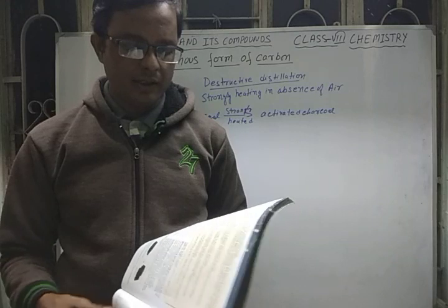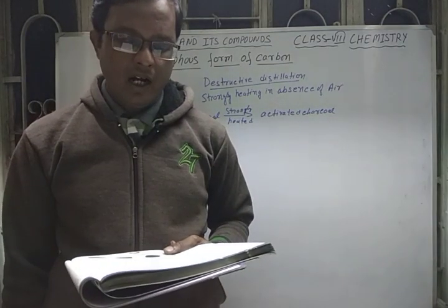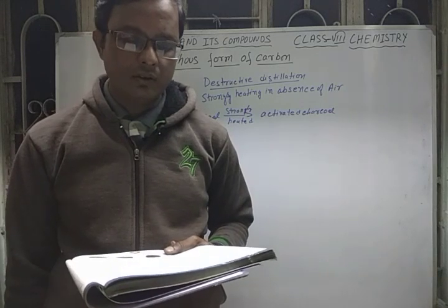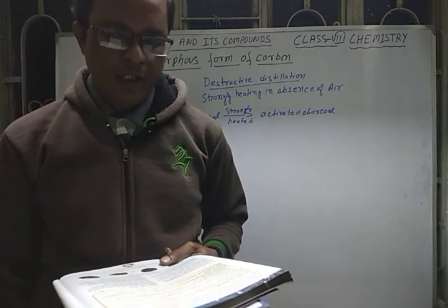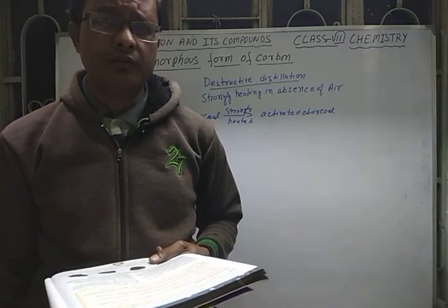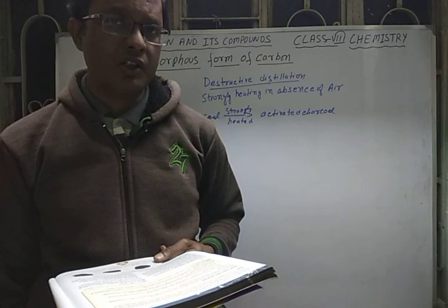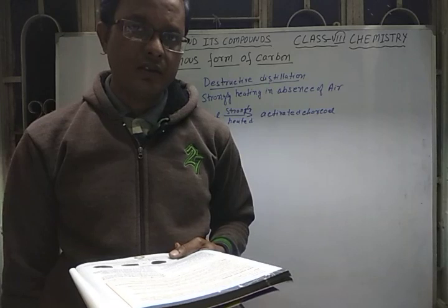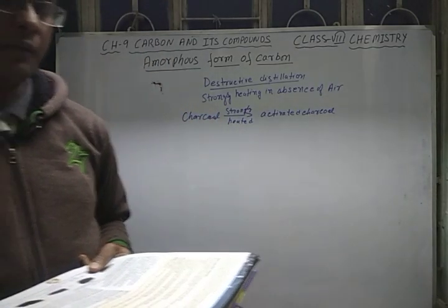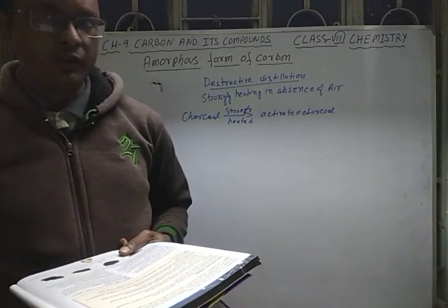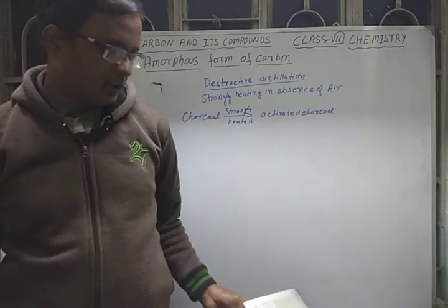The next amorphous form of carbon is coal. Coal is a black, hard solid. It is formed by the process of carbonification — the conversion of wood or decaying vegetable matter into coal under high pressure and high temperature deep inside the earth. This process slowly converts the organic matter into carbon, which hardens into coal. It takes millions of years to form coal from decaying vegetable matter.